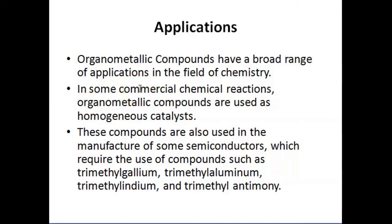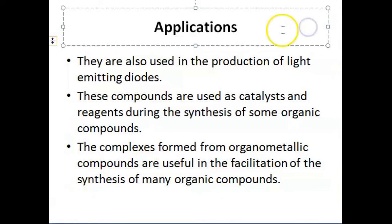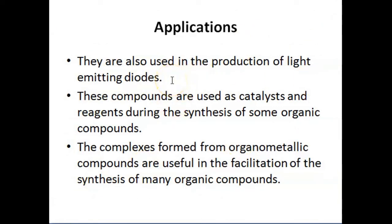Organometallic compounds have a broad range of applications in the field of chemistry. In some commercial chemical reactions, these compounds are used as homogeneous catalysts. They are also used in the manufacture of semiconductors, which require compounds such as trimethyl gallium and trimethyl aluminum, and they are used in the production of light emitting diodes. These compounds are also used as catalysts and reagents during the synthesis of organic compounds, and the complexes formed from organometallic compounds facilitate the synthesis of many organic compounds.